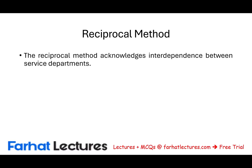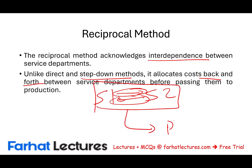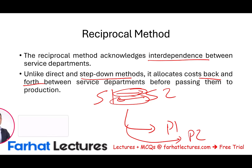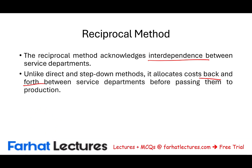The reciprocal method acknowledges interdependence between service departments. When we have two, three, or four service departments, there is an interdependence — both departments serve each other, and as a result they need to allocate costs amongst each other. Unlike the step method, it allocates costs back and forth between service departments before passing those costs to P1 and P2. In contrast to the direct method, where there is no relationship whatsoever.